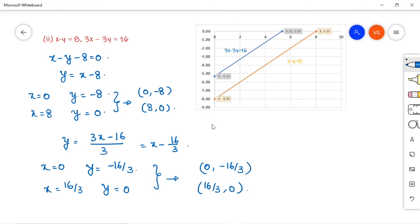And similarly mark the other two points. Join the graph points. We will get one straight line. So this line represents the equation 3x minus 3y is equal to 16. So we can observe from the graph also these two lines are parallel. So there is no solution for this set of linear equations.